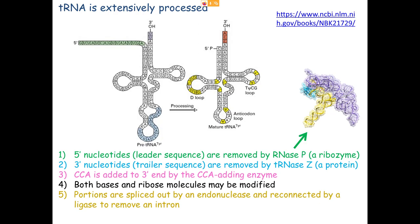Once we've trimmed the 5' and 3' ends and put the CCA back on, we start modifying some bases. One modification is pseudouridine — uracils flipped around and attached through their carbon instead of nitrogen, shown as ψ in the tRNA diagram. We also methylate many guanines and cytosines. In the D loop corner you see methylguanine and methylcytosine. All these modifications are required so the tRNA can fold properly — if one is missing, it won't adopt the correct shape.